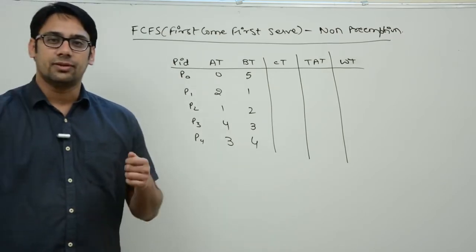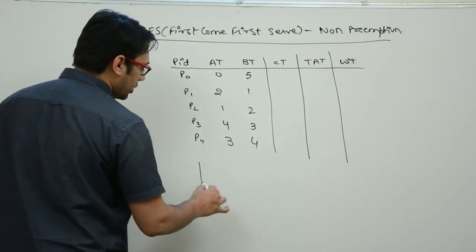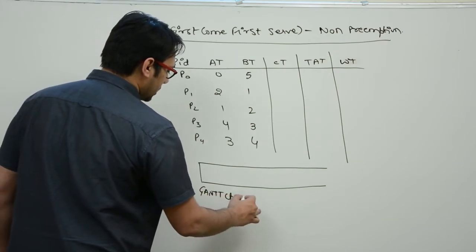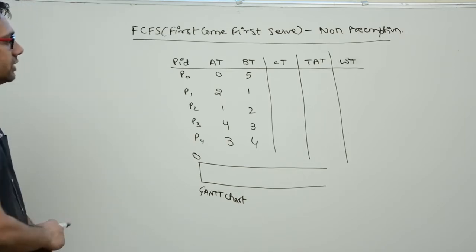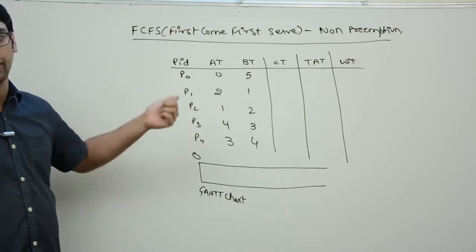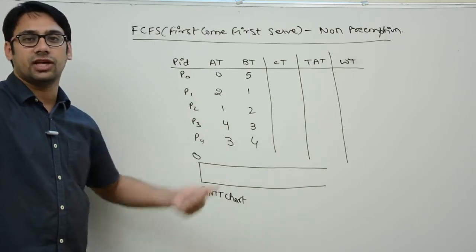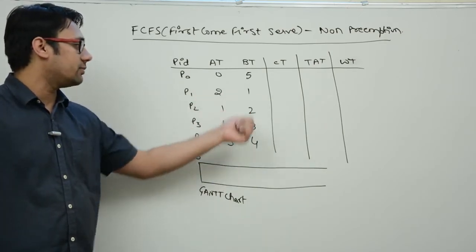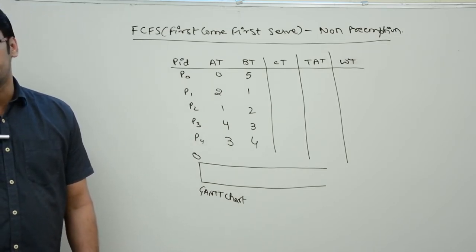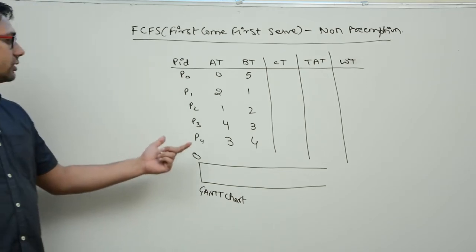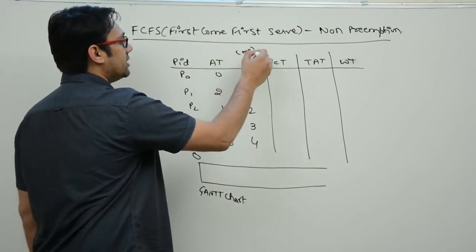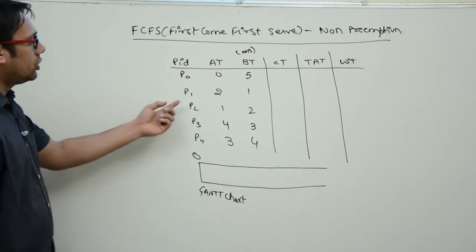Throughput is the number of tasks completed per unit time. We are going to construct a Gantt chart to visualize the schedule. The time values here are relative — you can think of them in milliseconds or any unit. For simplicity, I'm assuming them as unit time. At time 0, only one process, P0, has arrived in the ready queue and the CPU is available.